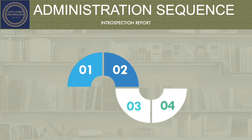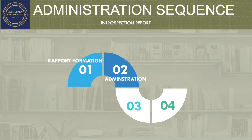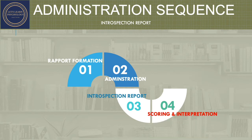After the subject has finished the test, the sequence of the testing procedure is: first, form a rapport; second, administer the test; third, take an introspection report from your subject about how he felt while doing the test; and the last part is scoring and interpretation. In the introspection report video, the subject says: 'The test was quite insightful and I enjoyed it. I could relate to the questions mentioned in the test. Thank you for making me comfortable.'